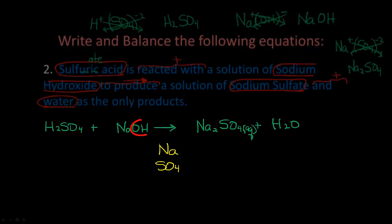The OH polyatomic: if it stays as OH on the product side, we keep it as OH, but it does not — it becomes part of H₂O, so we need to separate it into its oxygens and hydrogens. We do oxygen first, then hydrogen.